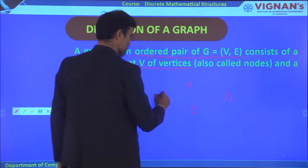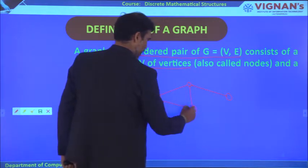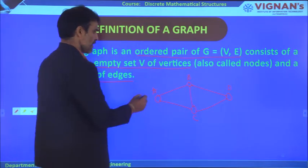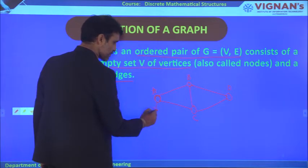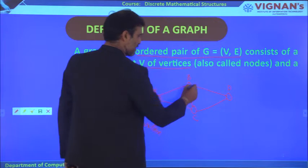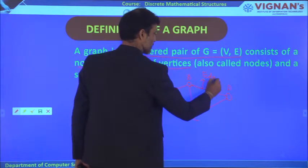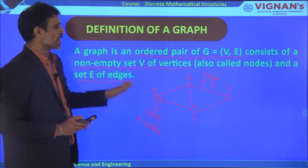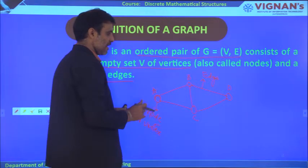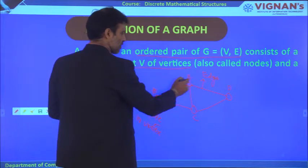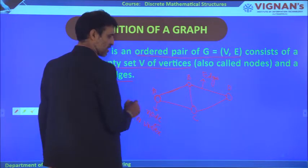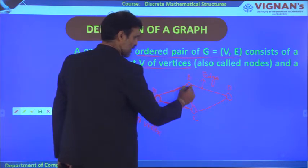Suppose I draw a diagram with vertices A, B, C, and D. The points are called nodes or vertices, and the lines connecting them are called edges. A graph is an ordered pair of V and E — the set of vertices connected by edges. For example, A and B are two vertices connected by an edge, A and C are connected by another edge, and B and C are connected by an edge.